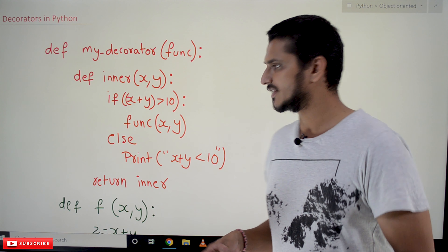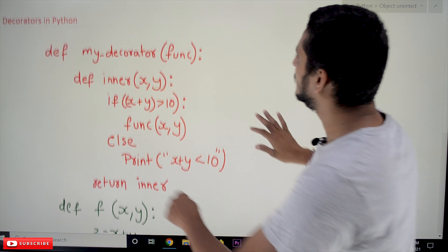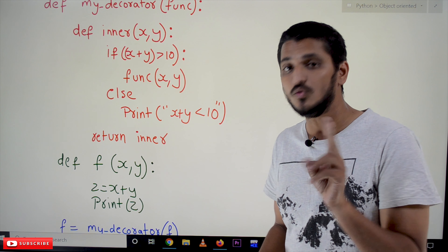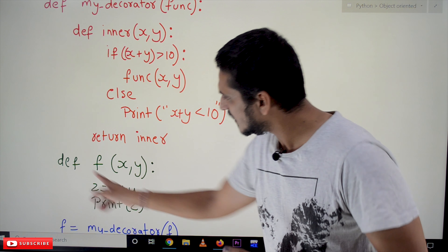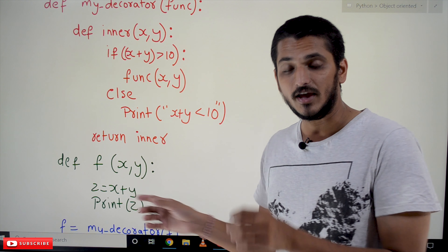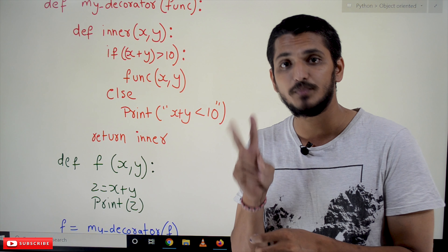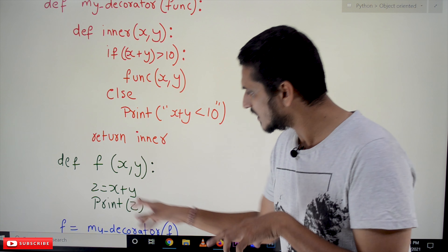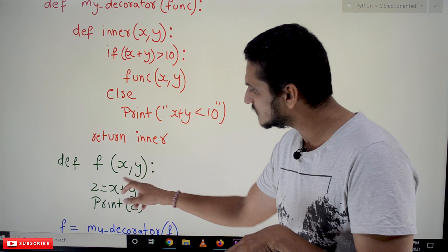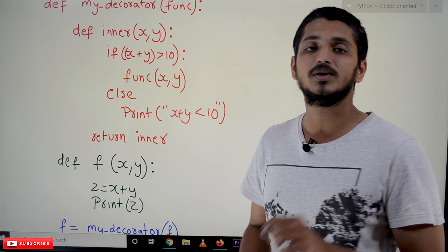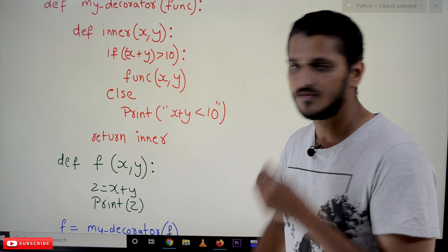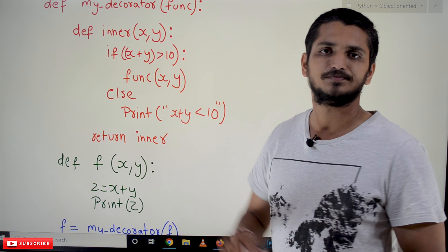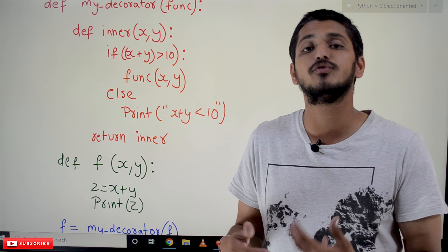In this example we have written two functions. One function is `f`. Function `f` is taking two parameters x and y. The functionality of this function is adding these two variables x plus y and placing it in a variable called z and displaying that variable. That is the functionality of function `f` — it does addition of two numbers.